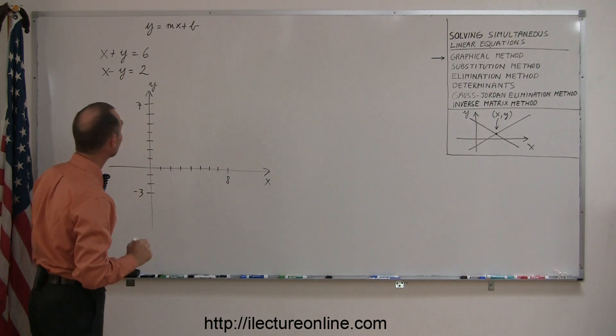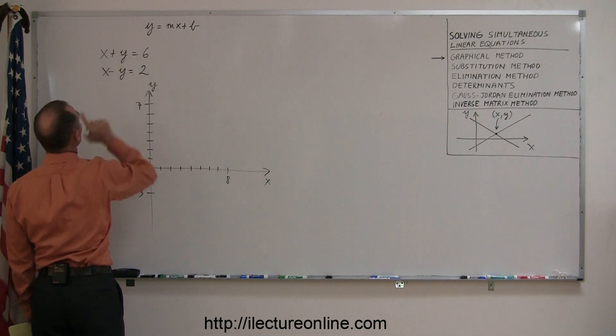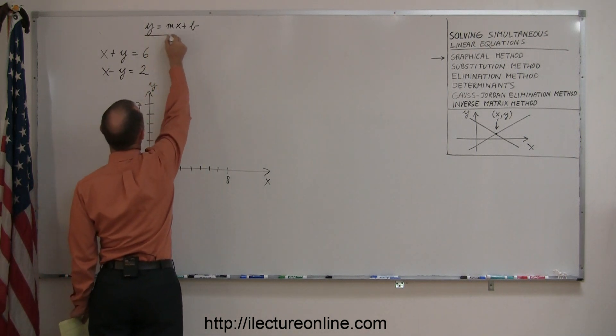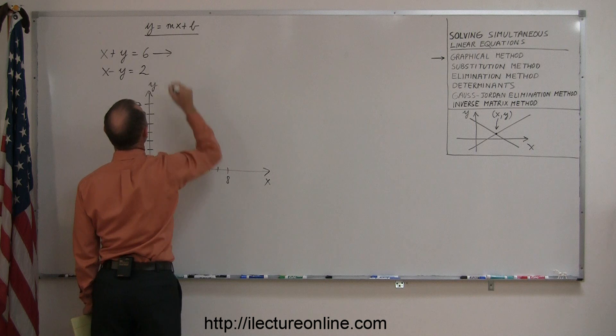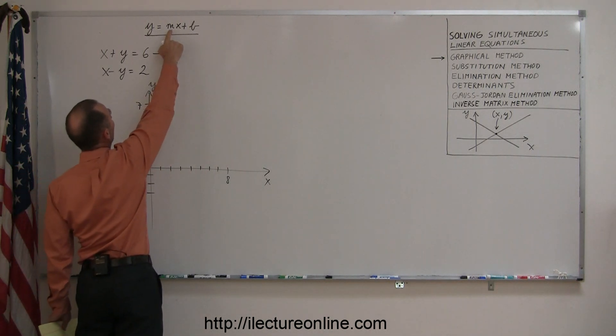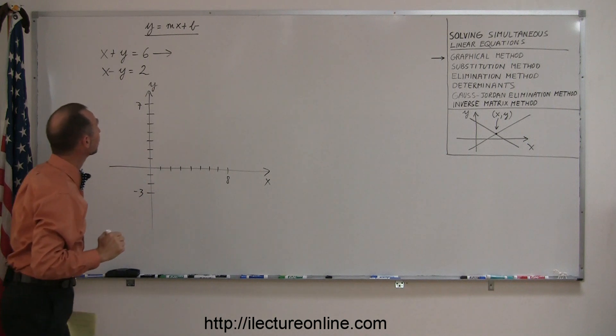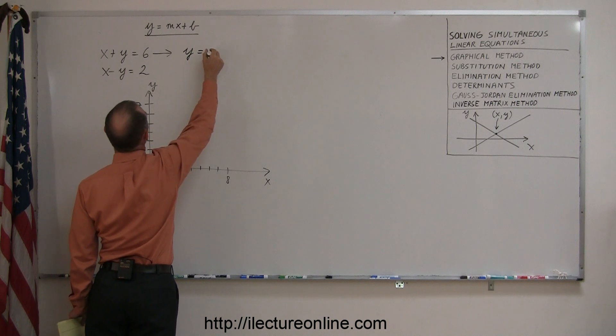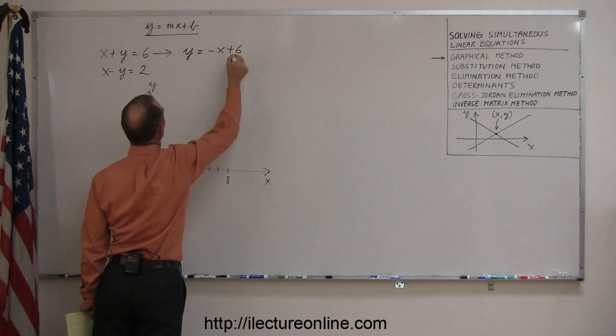Now, let me go ahead and graph these. Taking my first one, oh wait a minute, they're not yet in the slope-intercept form. I want to write them exactly in that form, so let me rewrite that equation like y equals mx plus b, m being the slope and b being the intercept. That means I have to move the x across, I get y equals minus x plus 6.